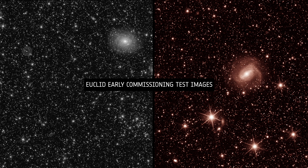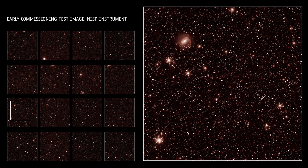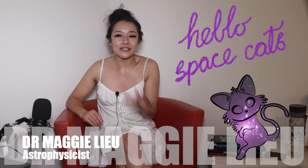These are the first images taken by the European Space Agency's Euclid Space Telescope — absolutely stunning imagery with so many galaxies in super fine, sharp detail. It's just what's needed to make a 3D map of the universe. But what exactly are we seeing and what does it tell us? I'm Dr. Maggie Lu and in this week's video, let's break down what exactly is in the Euclid test images.